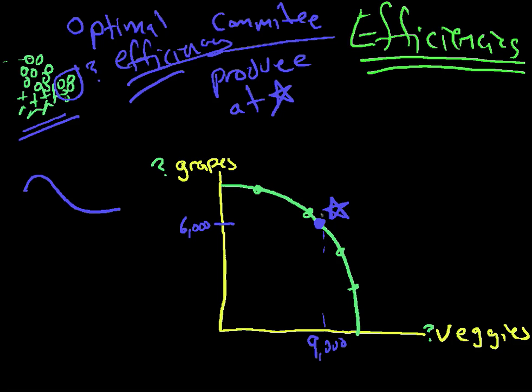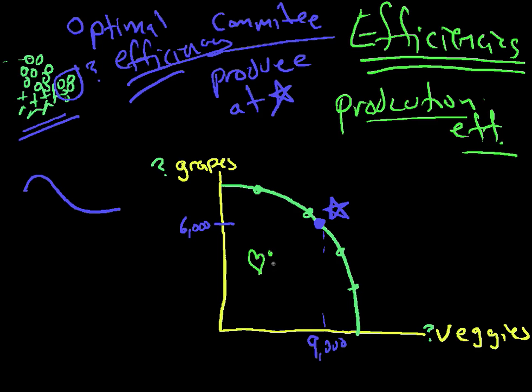Anywhere on this production possibilities curve is production efficient, meaning we're using all of our resources and they're being used the least costly way and we're producing some combination of grapes and vegetables that's using all. If you're inside here, like at a point like this, we'll put a heart there, that's not production efficient. You could be producing more of both things, but you're not. You're not using all of your land. It's like this part of the land just goes fallow. Nobody uses it. Well that's not smart. These people want at least something, some more, so inside here is not production efficient. The second thing you're trying to get at is allocation efficiency. That's number two. One production efficiency, two.